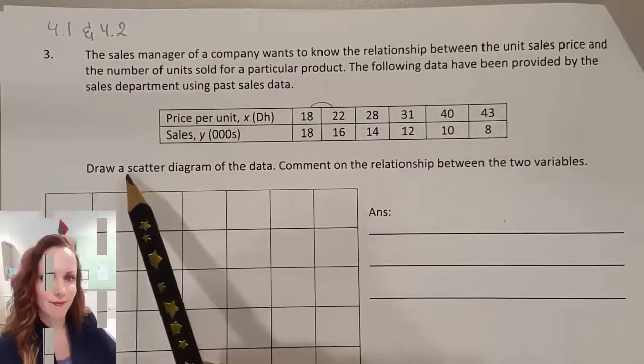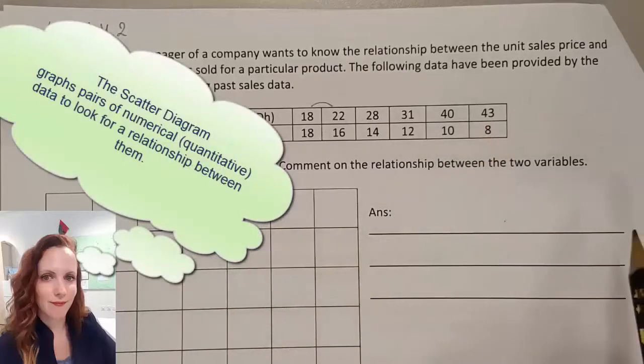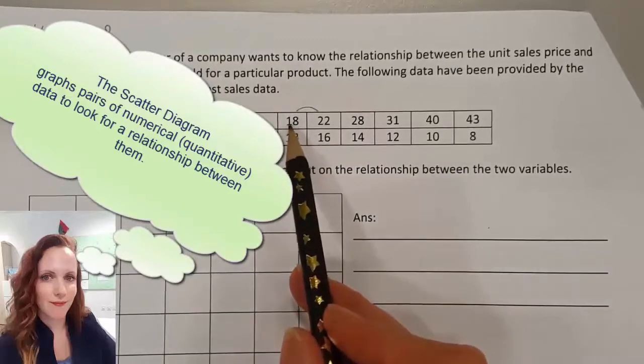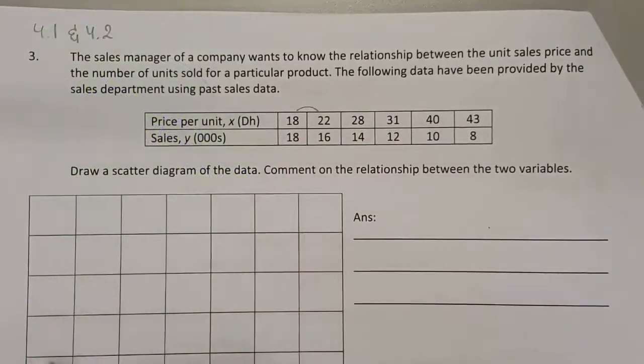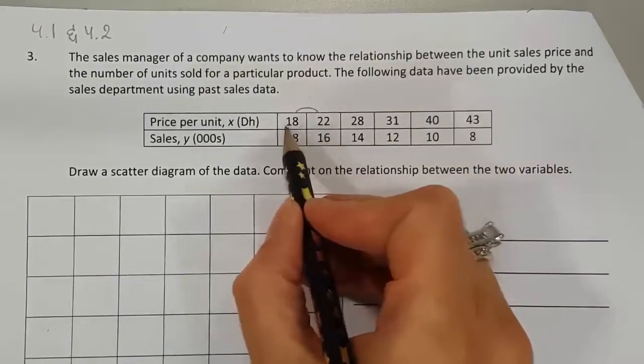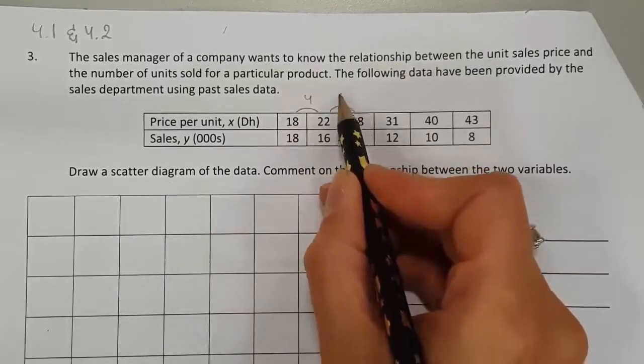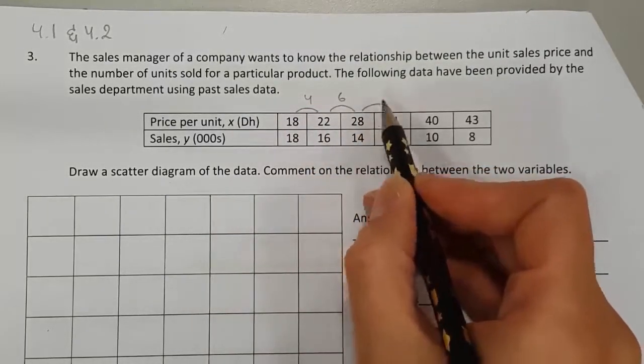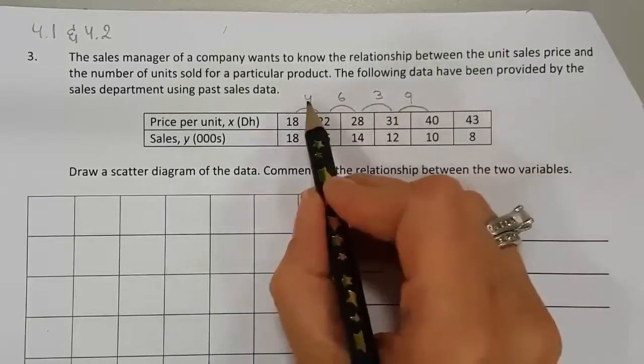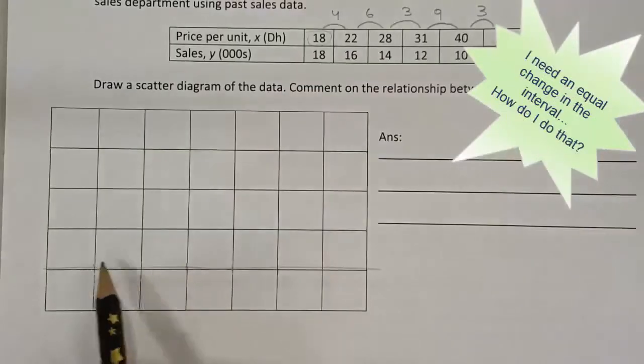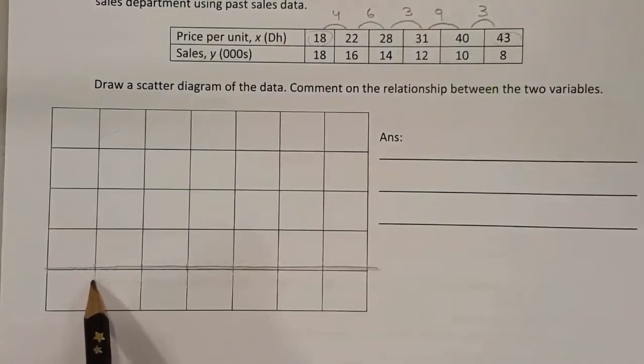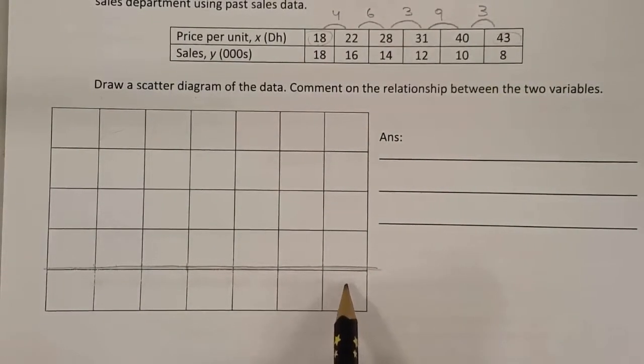We're asked to draw a scatter diagram of this data. So somehow I have to graph all of these x inputs on this chart. I notice the difference between 22 and 18 is 4, this is 6, and from 28 to 31 is 3. These intervals are not jumping at an equal rate. I have to have a graph with the lowest number 18 and the highest number somewhere there fitting 43.